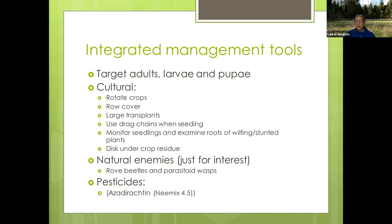Disking under crop residue is also really important — leaving infected brassicas in the ground perpetuates the life cycle. These do have natural enemies, but in a farm situation the natural enemies aren't numerous enough to help significantly. Rove beetles and parasitoid wasps are your friends. Pesticide — I put it in parentheses because it's not recommended for very many crops, and since this pest spends its whole life underground, prevention is your best bet.